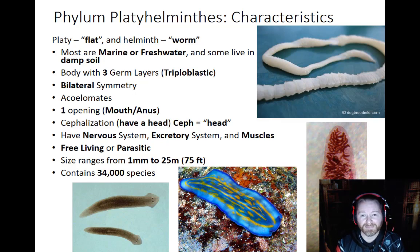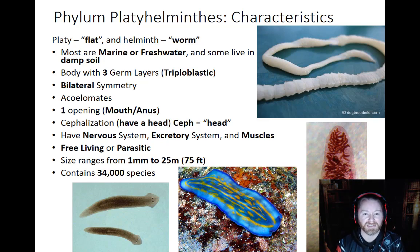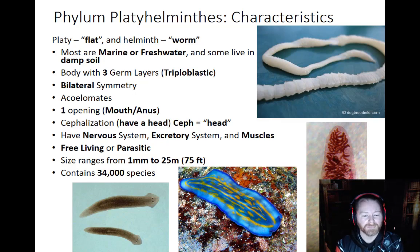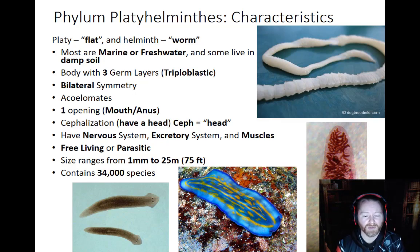They can be free-living, but a good portion of them are parasitic. We'll go into detail on the parasitic ones because it is a rather robust group, and many of those parasitic flatworms actually affect humans, so we know a lot about those species. Their size range can go from as small as one millimeter all the way up to 75 feet — 25 meters — in length, so quite a vast range.